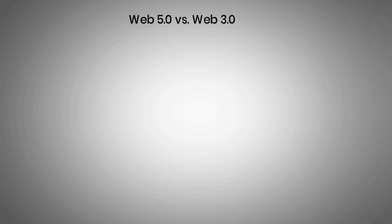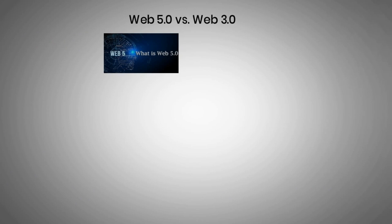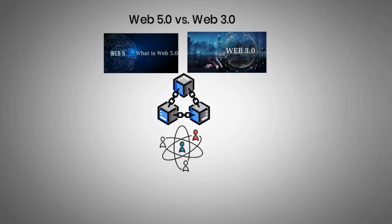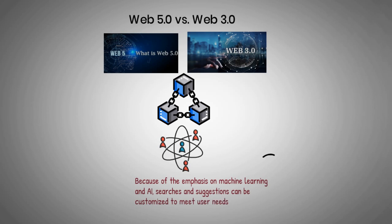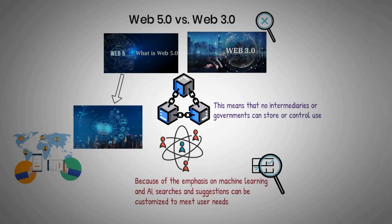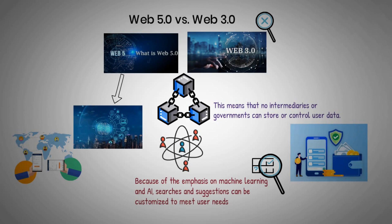Web 5.0 vs. Web 3.0. Similarities include: both platforms were built with blockchain technology in mind; interpersonal communication will become possible between people without the need for intermediaries; and because of the emphasis on machine learning and AI, searches and suggestions can be customized to meet user needs. Key differences: Web 5 will enable computers to respond to emotions via the brain's signals, which is not possible with Web 3.0. Web 5 is a fully decentralized version of the internet, meaning no intermediaries or governments can store or control user data. Web 5 will be the only platform allowing users to seamlessly move between apps within their digital wallets.